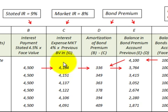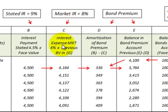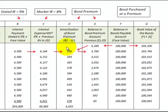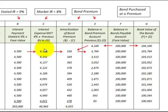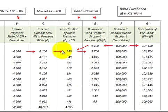To recognize interest expense each period we use the market interest rate. In this case that's 8%, so our interest expense per period is based on 8% divided by two, or 4%. To calculate it, we take the beginning balance of the bond — in this case $104,100 — and multiply by 4% to get our interest expense for the period.